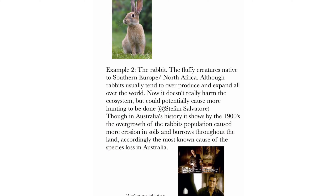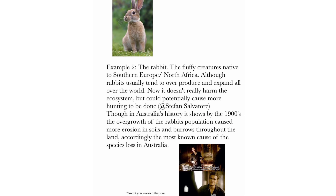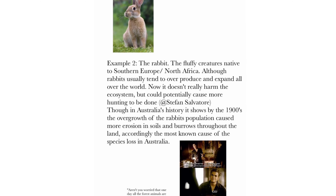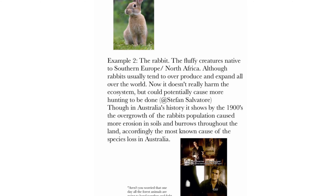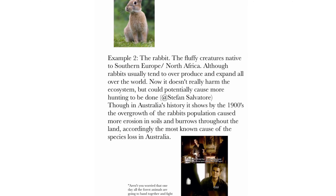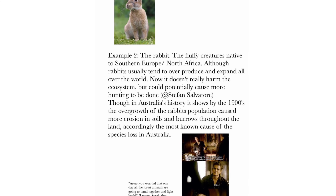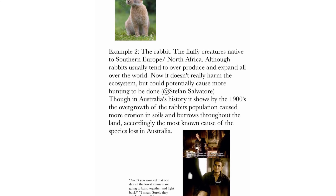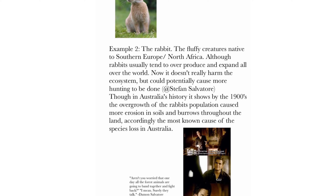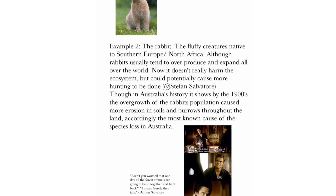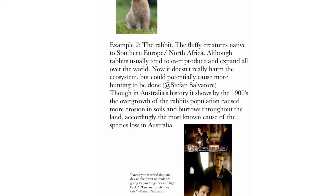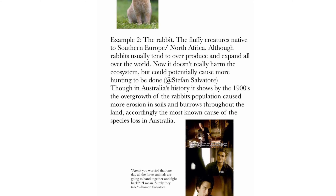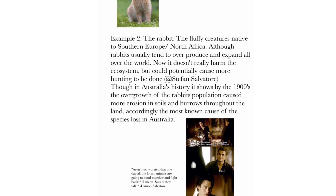Example 2: The rabbit. The fluffy creatures native to southern Europe and North Africa. Although rabbits usually tend to overproduce and expand all over the world, it doesn't really harm the ecosystem, but could potentially cause more hunting to be done. In Australia's history, by the 1900s the overgrowth of the rabbit population caused more erosion in soils and burrows throughout the land — accordingly, the most known cause of species loss in Australia.